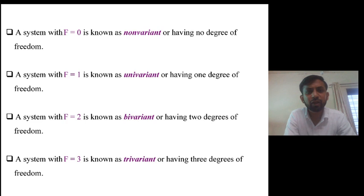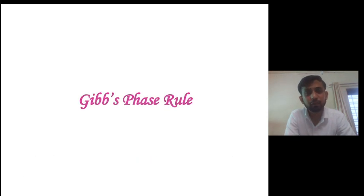If degree of freedom F = 0, such a system is called monovariant or having no degree of freedom. If F = 1 it is known as univariant or having one degree of freedom. In the same way if F = 2 it is known as bivariant or having two degrees of freedom. If F = 3 it is known as trivariant or having three degrees of freedom. Gibbs phase rule.